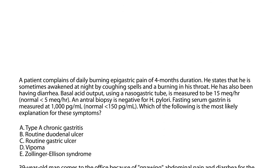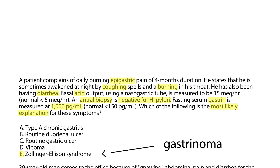Let's take a look at a few vignettes. A patient complains of daily burning epigastric pain of four months duration. He is sometimes awakened at night by coughing spells and a burning in his throat, and he has also been having diarrhea. Basal acid output is measured at 15 mEq/hour (normal less than 5), antral biopsy is negative for H. pylori, and fasting serum gastrin is 1000 (normal less than 150). The extremely high gastrin, along with these symptoms, strongly indicates gastrinoma and fits the picture for ZE syndrome.